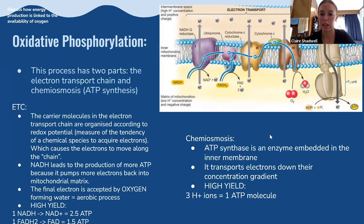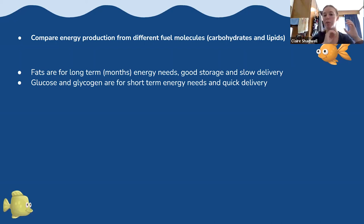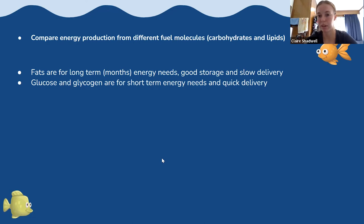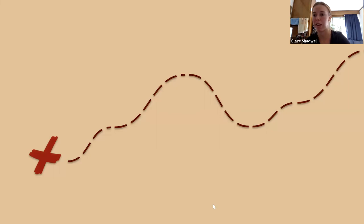To compare energy production from different fuel molecules: fats are for long-term energy needs because they have good storage and slow delivery — beta-oxidation keeps cycling to remove two carbon molecules at a time. Glucose and glycogen are for short-term energy needs and quick delivery. That was a big overview — you'll go through much more in the coming lectures, and some of these lectures may be split over next week. We hope that was helpful and we'll stick around if you have any questions.